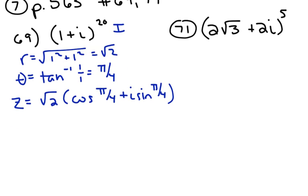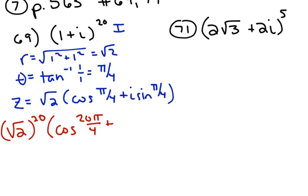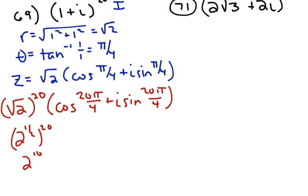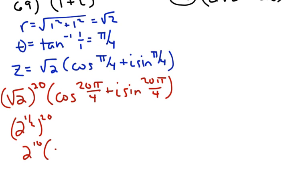The way De Moivre's theorem works — since we're going to raise this to the 20th power — all I have to do is raise the square root of 2 to the 20th power and then multiply each of these angles by 20, so I get 20 pi over 4. The square root of 2 raised to the 20th power is 2 to the 1/2 to the 20th power, which is 2 to the 10th. And 20 pi over 4 is just 5 pi.